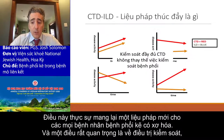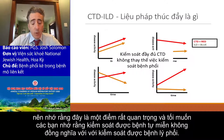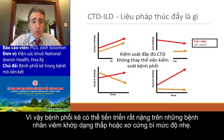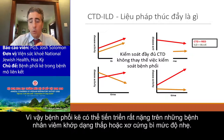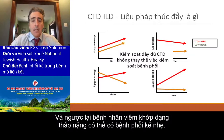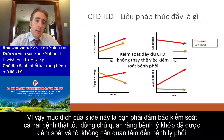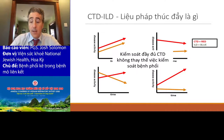An important point on what's driving therapy: just because you have control of the autoimmune disease does not mean your ILD is under control. Interstitial lung disease can progress significantly in patients with mild rheumatoid arthritis or mild scleroderma. The opposite is also true — you can have really bad rheumatoid arthritis and very mild lung disease. Make sure you are watching both carefully. Don't feel a sense of relief that their joint disease is under control and think you don't need to look at their lungs. That's not true.